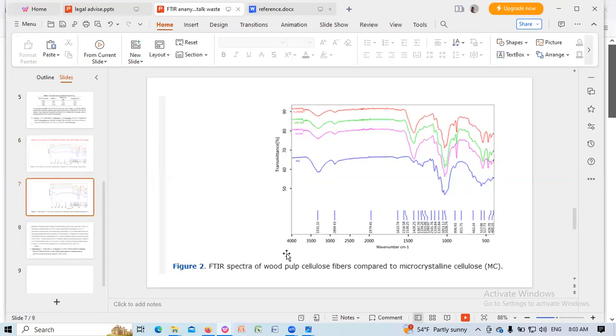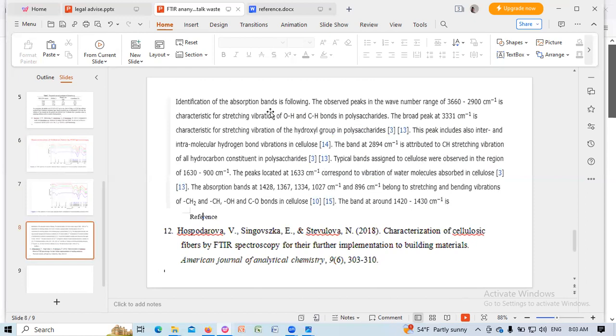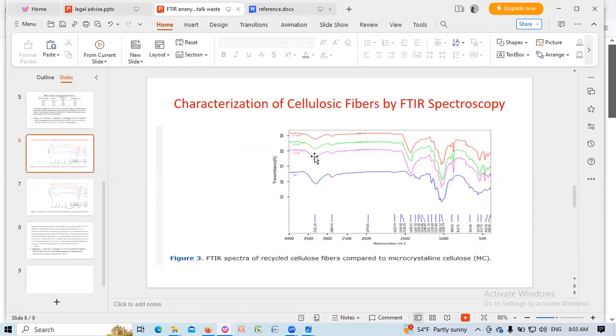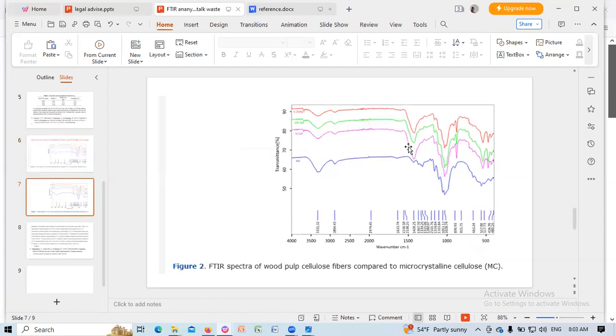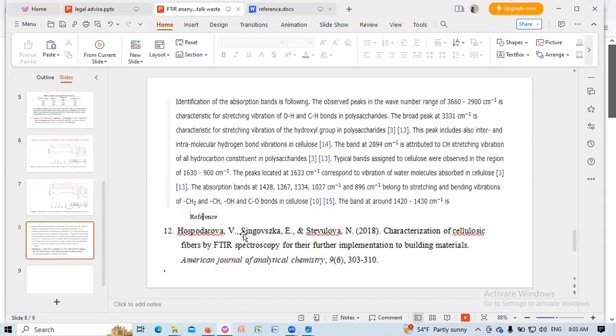You can see, this is the FTIR spectra of wood pulp cellulose fibers compared to microcrystalline cellulose. You can see similar peaks in comparison. This is the explanation of the peaks of the FTIR characterization of cellulose fibers by FTIR spectroscopy, and this is by reference.